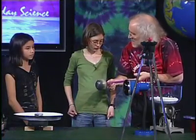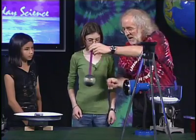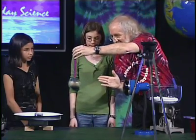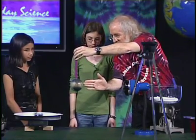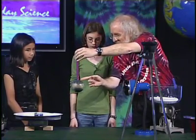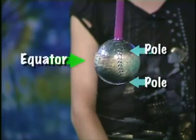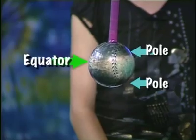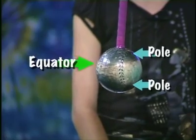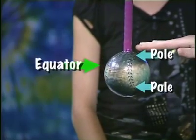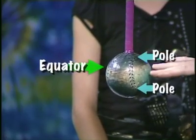And it just has to do with this: when the light comes out, it's hitting the middle full on, but here at the poles it's hitting at an angle, so this doesn't get as much light as the equator does.